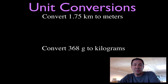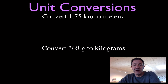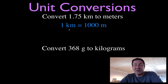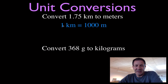Our first problem is to convert 1.75 kilometers to meters. Before doing the conversion, the first thing you should always do is write down the conversion factor — it helps you avoid confusion. Think about which unit is bigger: the kilometer or the meter. Put a one in front of the bigger one. So we have: one kilometer equals one thousand meters. This is the conversion factor — it tells us these two things are equal to each other.